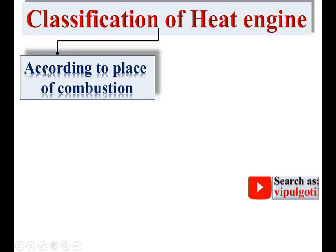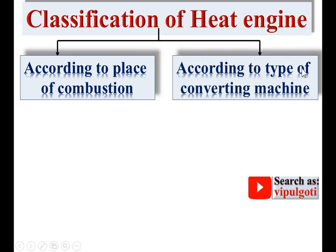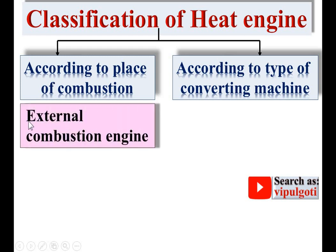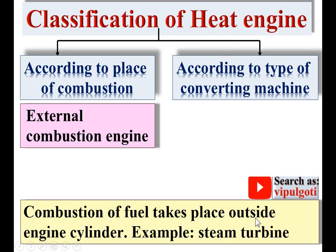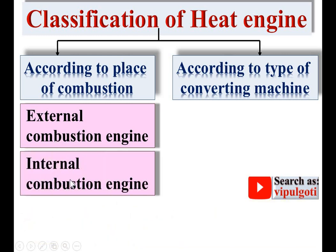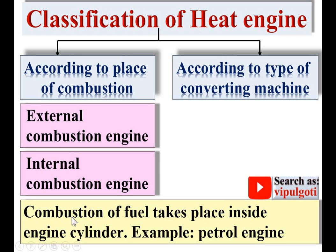Now the classification of heat engines — there are two broad categories. First is according to the place of combustion. In an external combustion engine, combustion of fuel takes place outside the engine cylinder — example: steam turbine. In an internal combustion engine, combustion of fuel takes place inside the engine cylinder — example: petrol engine.